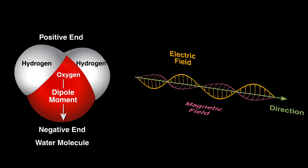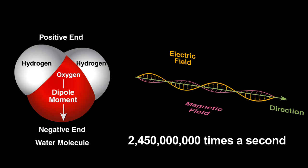By definition, the waves have electrical and magnetic fields that change direction rapidly. For this oven, the direction of the fields change 2.45 billion times per second.